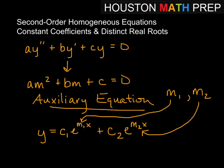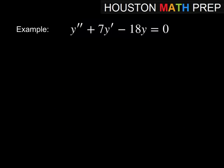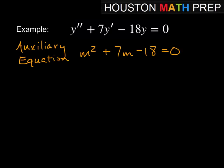Alright, let's look at a few examples and we'll sort of get the idea of how this works. Alright, our first example, y'' + 7y' - 18y = 0. So we'll go ahead and write down that our auxiliary equation is going to look like m² + 7m - 18 = 0.